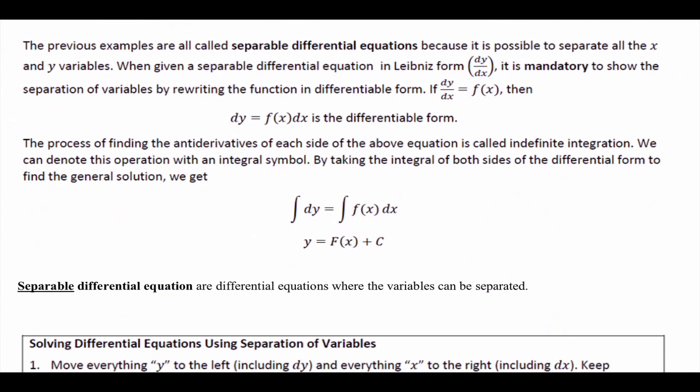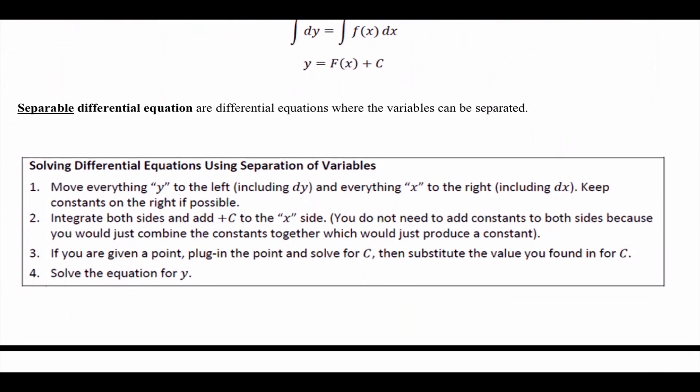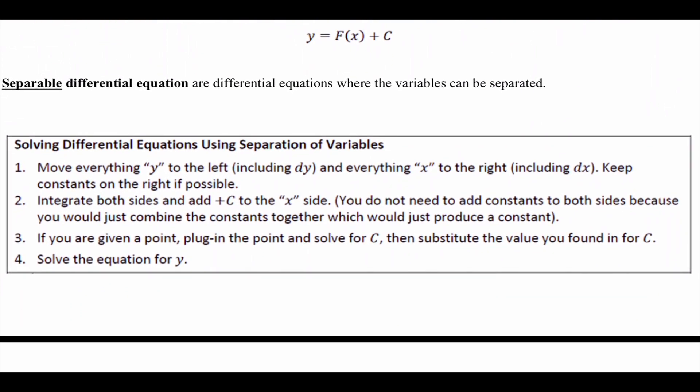It is mandatory to show the separation of variables by rewriting the function in differentiable form. The process of finding the antiderivative of each side is called indefinite integration — we just did that whole chapter. We can denote this operation with an integration symbol by taking the integral of both sides. So our first job is to separate. Here are the steps — read the steps to yourself because we're going to do them in about 30 seconds.